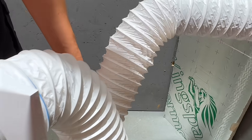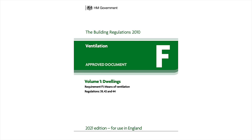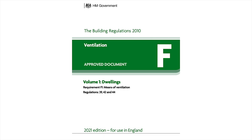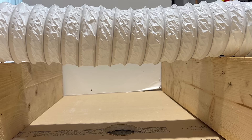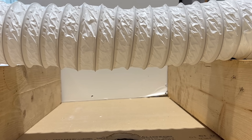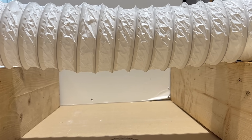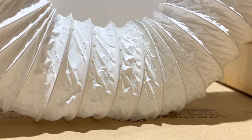The latest revision of Approved Document F places restrictions on the use of flexible ducting. If you do choose to use it, ensure that it's fully extended and adequately supported to prevent moisture buildup.